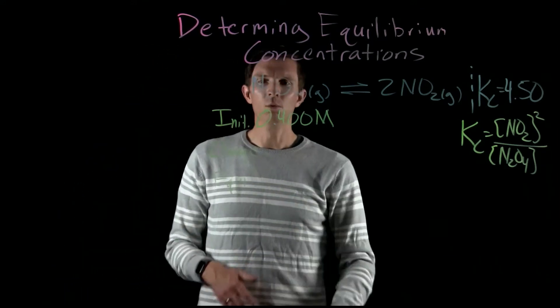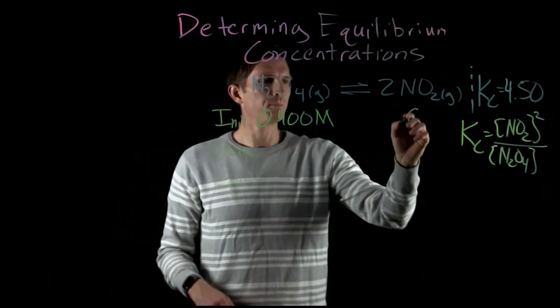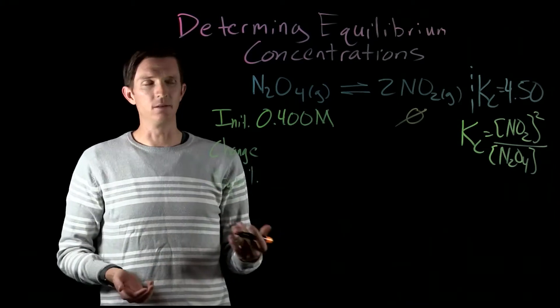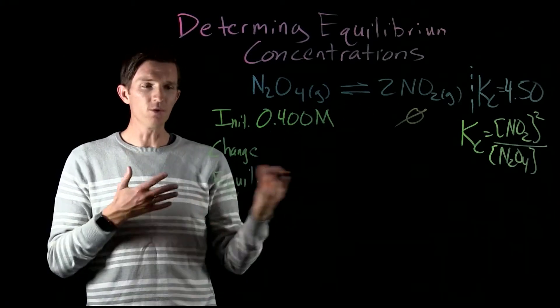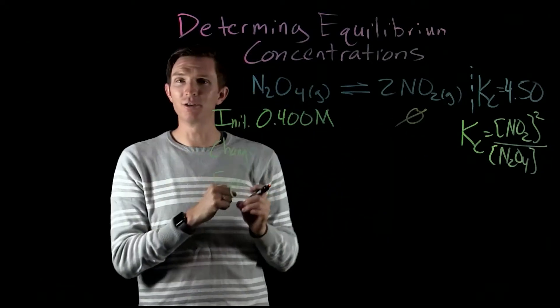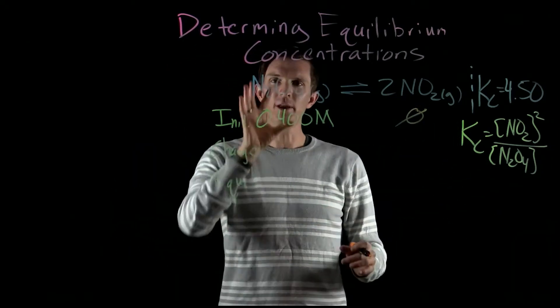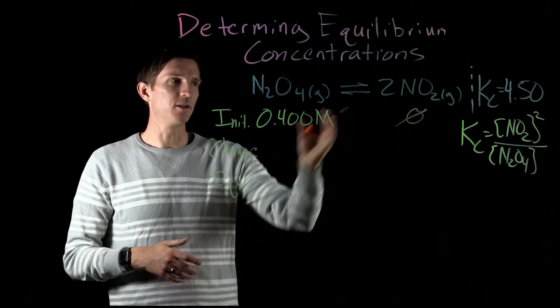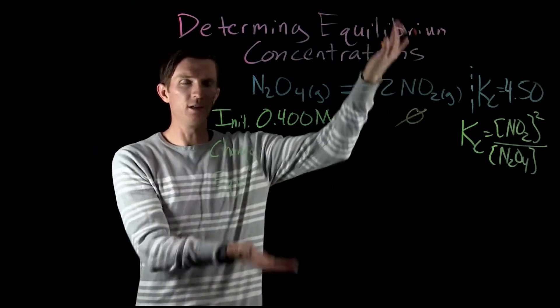Well we know that we added in 0.4 molarity of N2O4. We didn't say we added any NO2 into it, so we just added our reactants, we didn't start with any. So we're going to look at, as we go from our initial to our equilibrium, we know that our N2O4 concentration is going to decrease and our NO2 concentration is going to increase, right, because our NO2 can't decrease—one has to increase, one has to decrease on each side of our reaction.